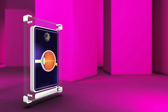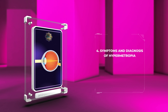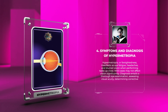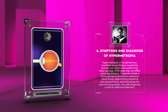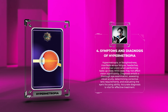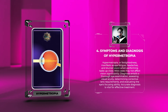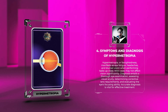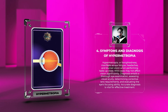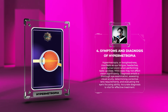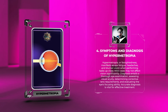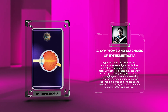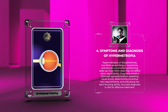Hypermetropia, or farsightedness, manifests as eye fatigue, headaches, and blurred vision when performing tasks up close. Mild cases may not affect vision significantly. Diagnosis entails a thorough eye examination, assessing visual acuity, determining corrective lens requirements, and evaluating the eye's focusing ability. Accurate diagnosis is vital for effective treatment.